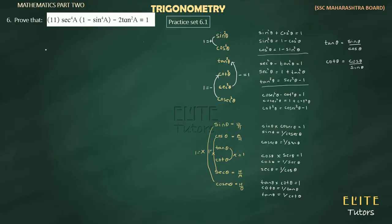Let's do the strengths. Question number 11 — let's see how we solve it. Let's take the left hand side, which is given to be sec raised to 4a, into 1 minus sin raised to 4a, minus 2 tan squared a. This is our left hand side. Let's simplify it and show that its value is 1.